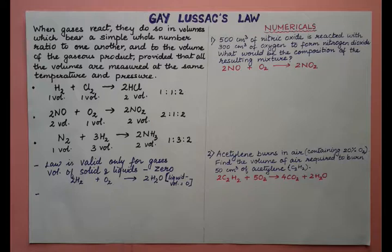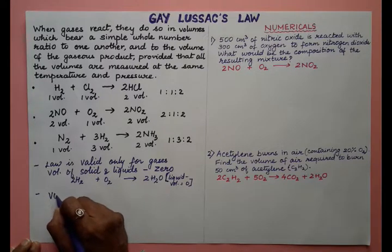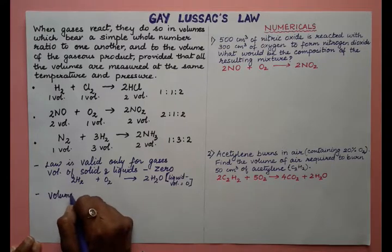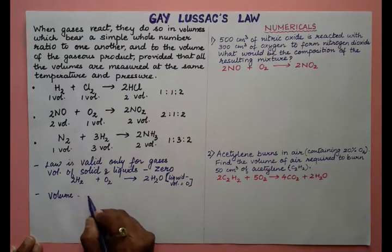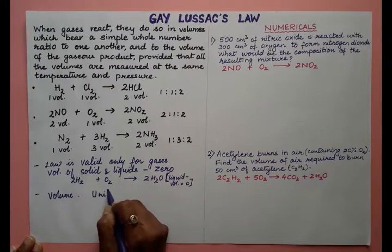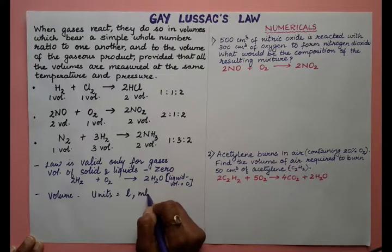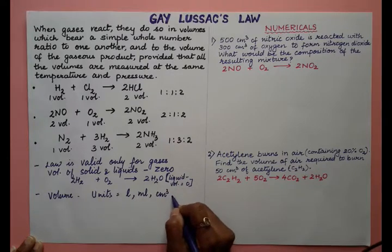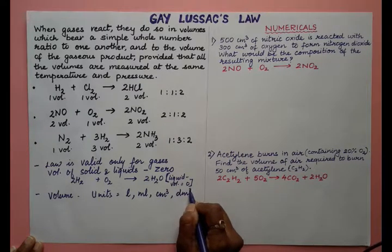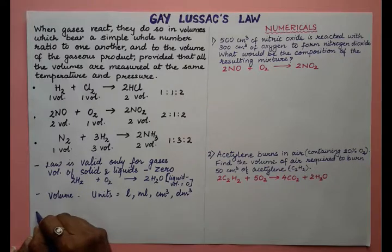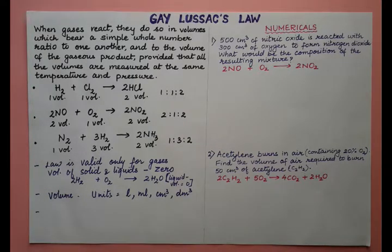We are dealing with gases only. The units for volume that we will mostly use are litres, millilitres, centimetre cube, and decimetre cube. Another important point: if the question asks to calculate the composition of the resultant mixture, then we have to calculate the unreacted reactant and the product formed.